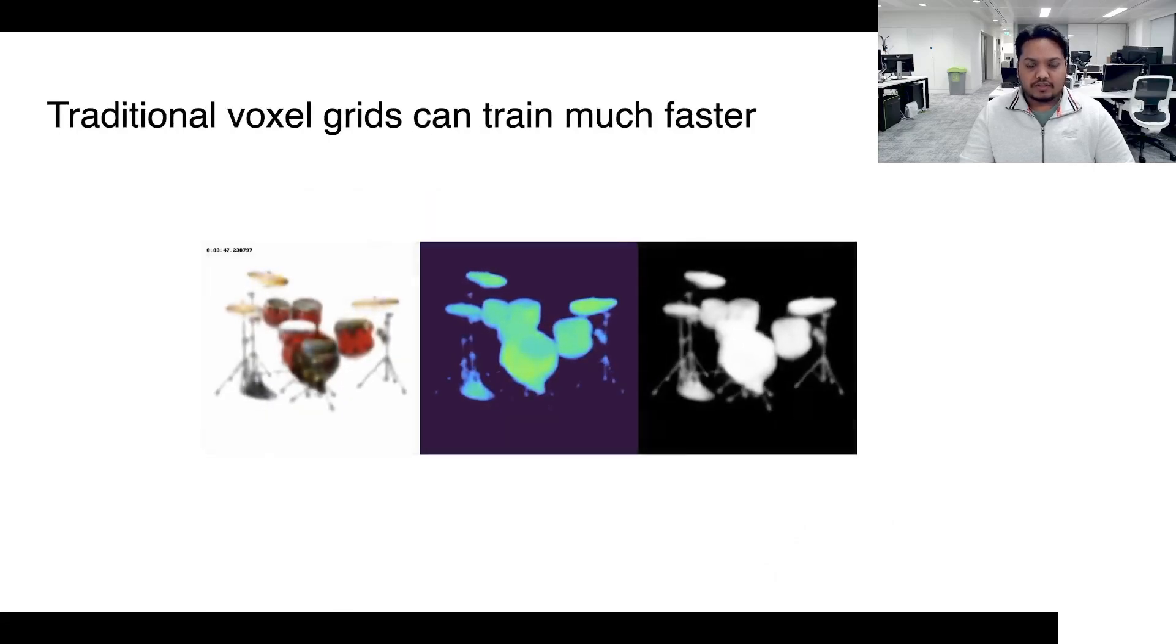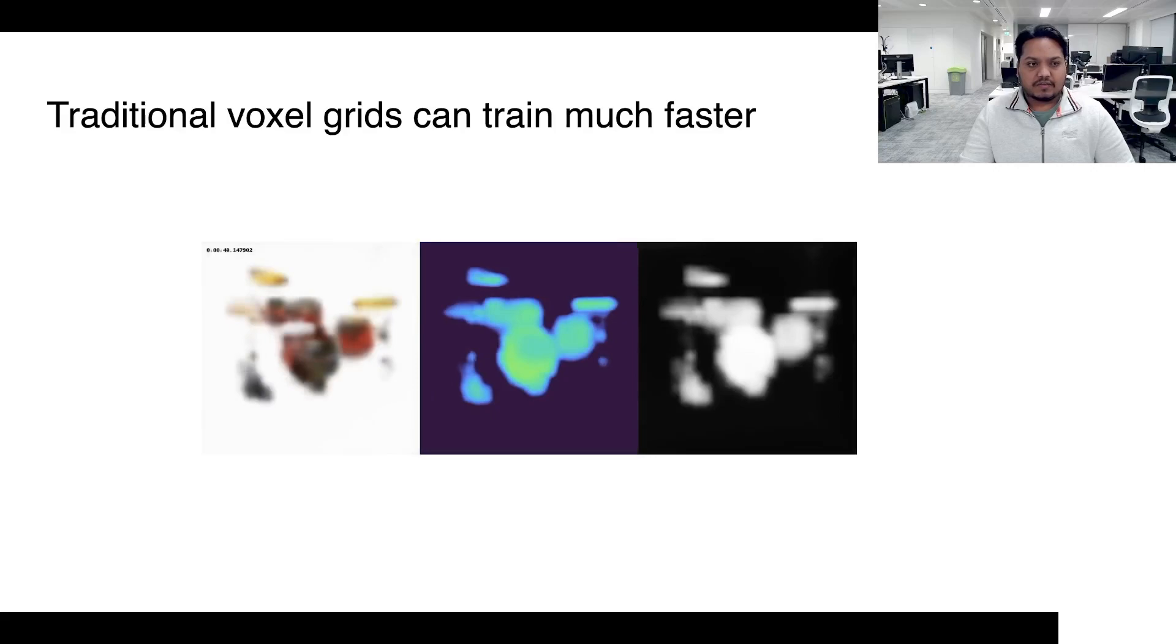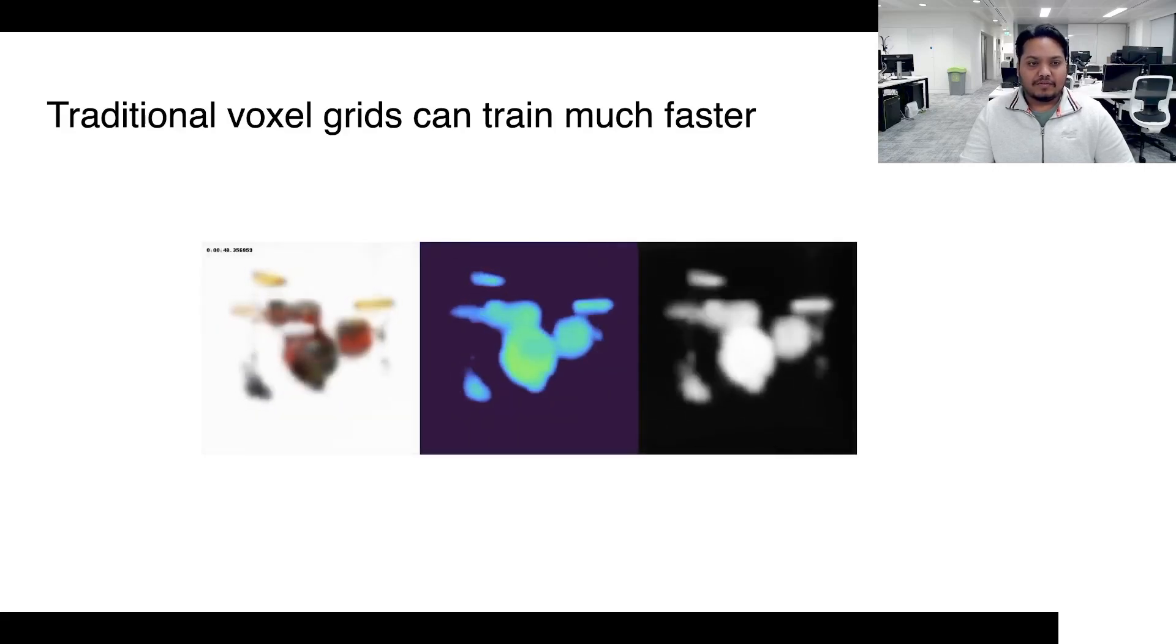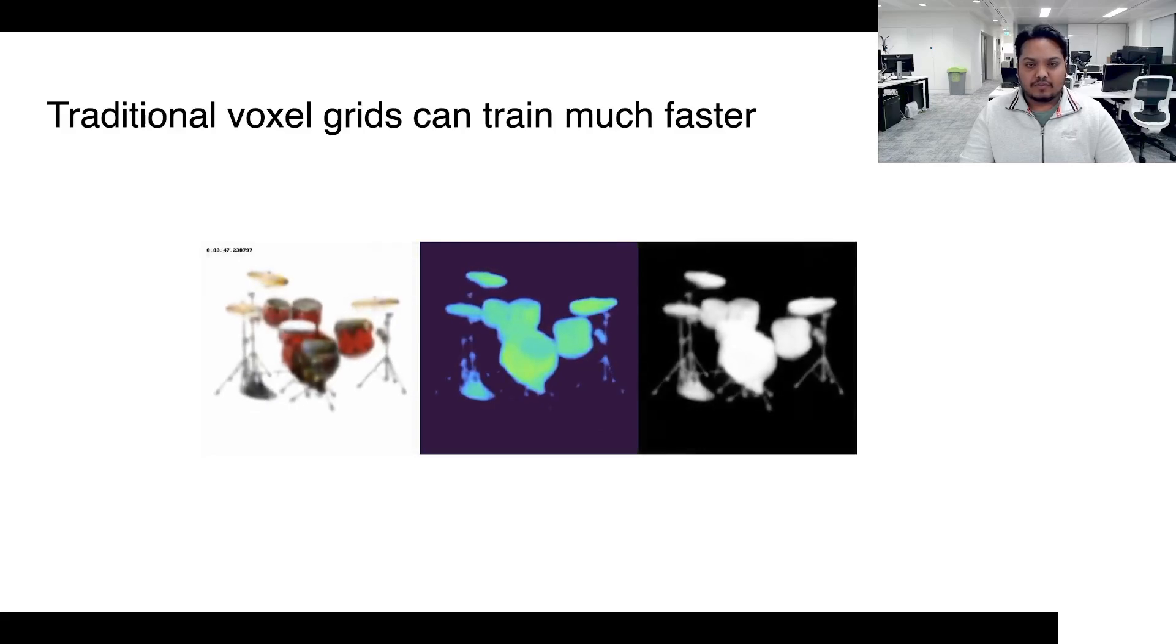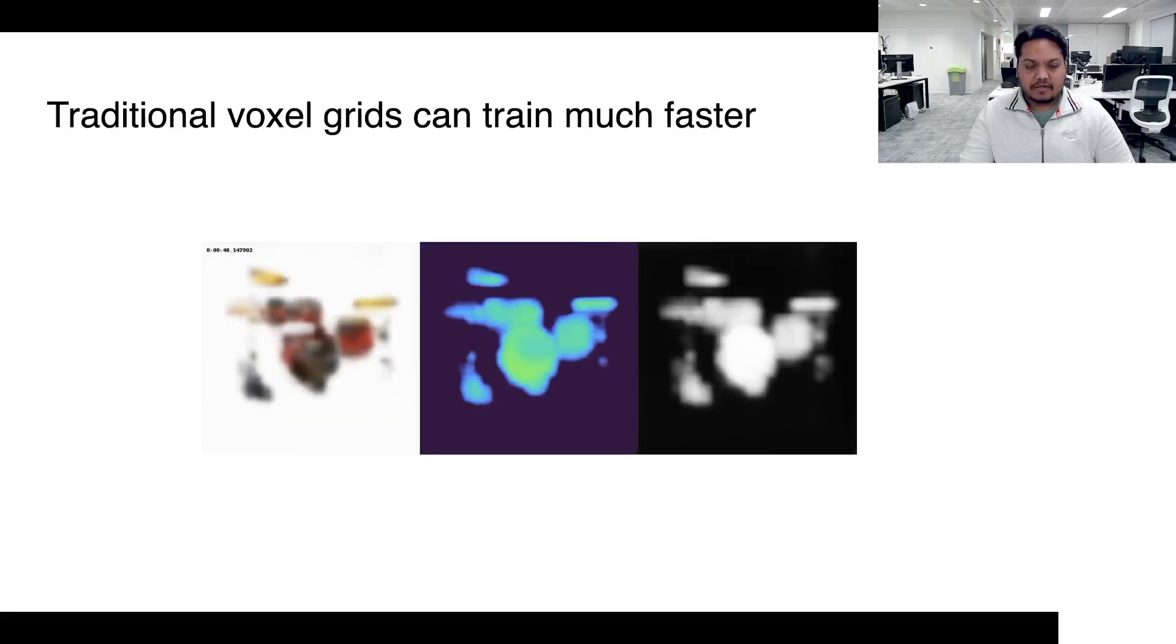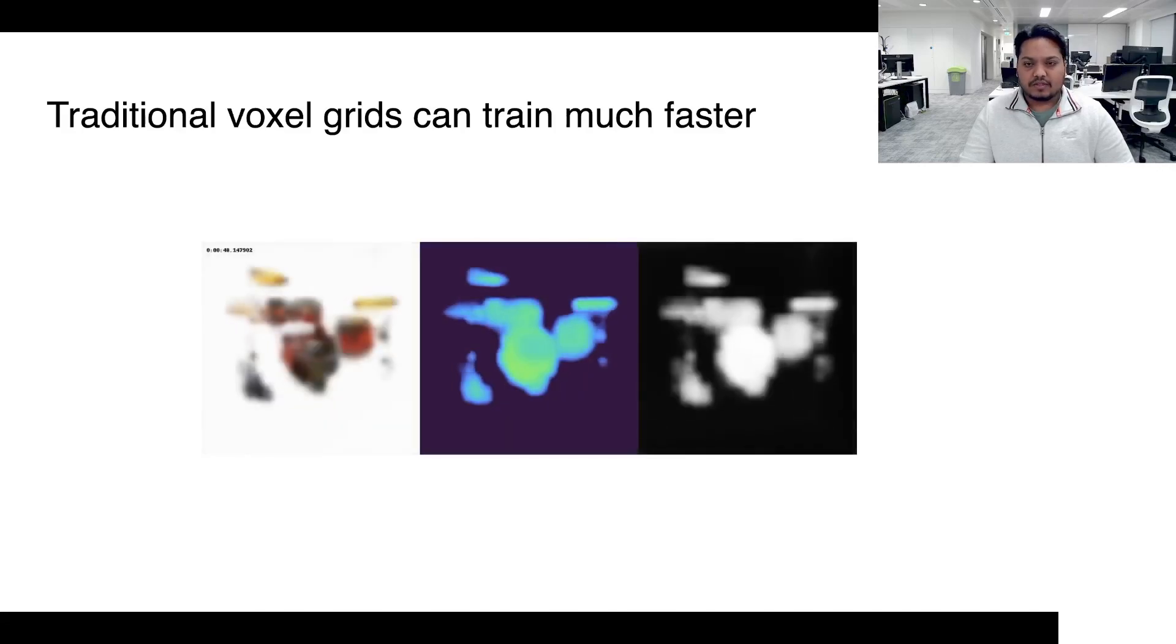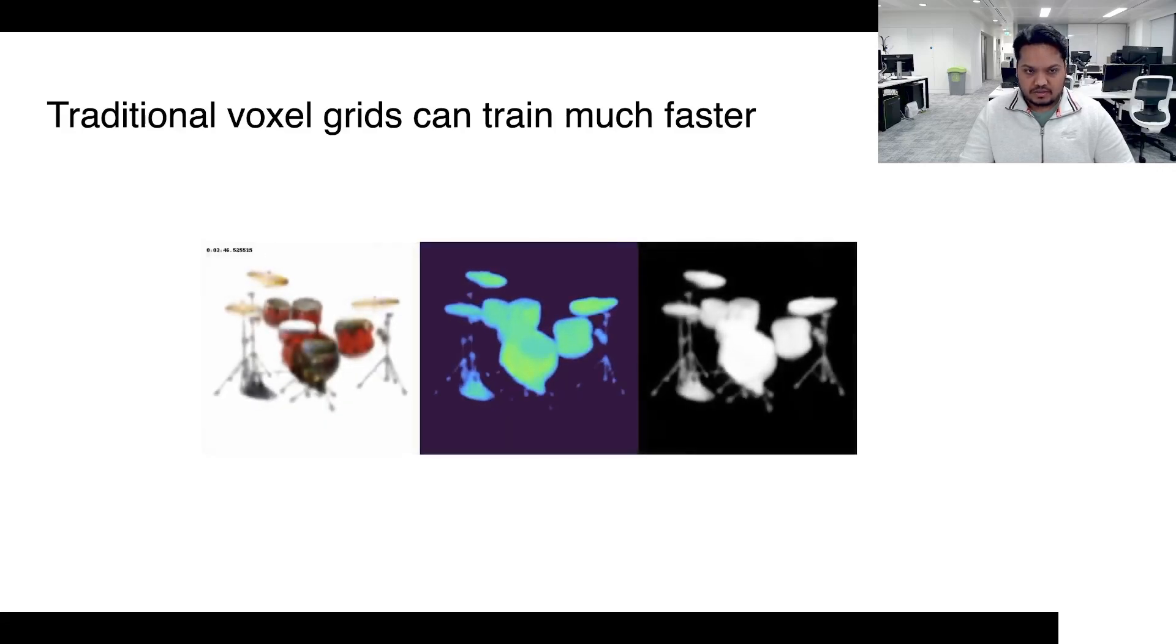Prior to NeRF, the traditional way of storing such information has been in the form of a voxel-quantized volumetric grid. We find that optimizing these voxel volumes in a stage-wise manner, i.e. training the voxel grid from a coarse to a fine resolution as visible from the visualization, can actually reconstruct the 3D scenes much faster compared to NeRFs. The time needed in this case is of the order of minutes.